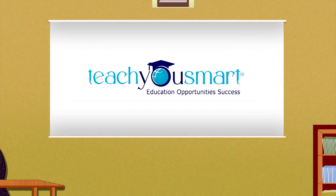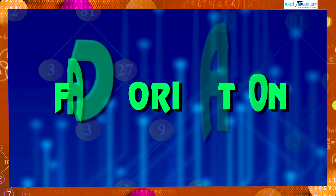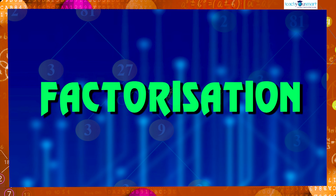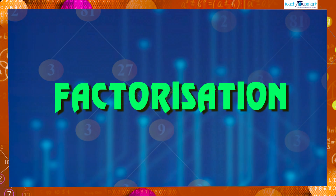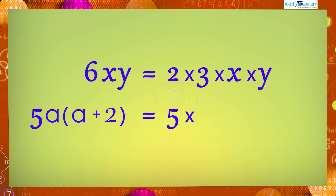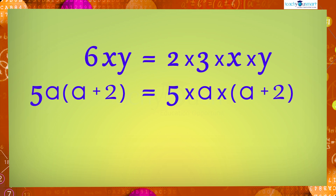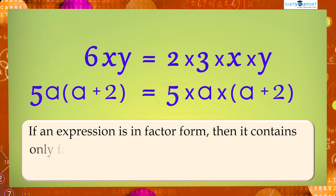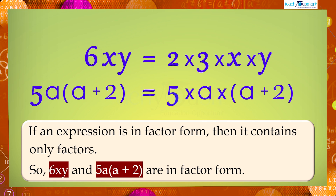Hello students, welcome to Teach You Smart. Let's continue our journey through factorization. We know the irreducible form of the expression 6xy is 2 multiplied by 3 multiplied by x multiplied by y, and that of 5a(a+2) is 5 multiplied by a multiplied by (a+2). In both cases, the given expressions contain only factors. If an expression is in factor form, it contains only factors, so 6xy and 5a(a+2) are in factor form.